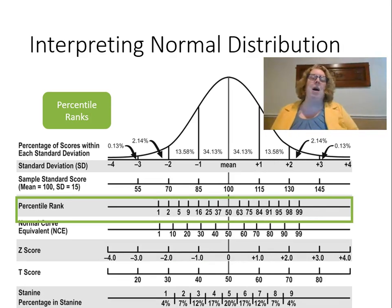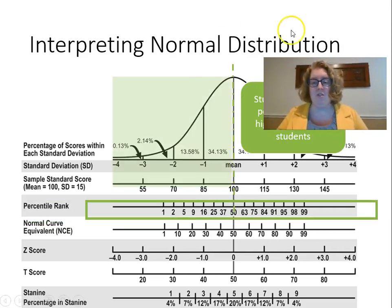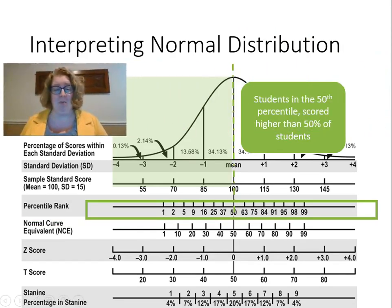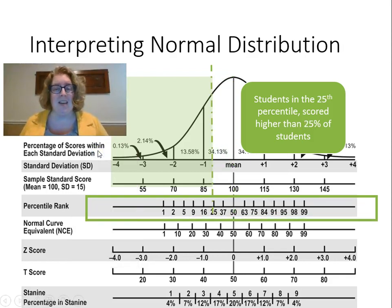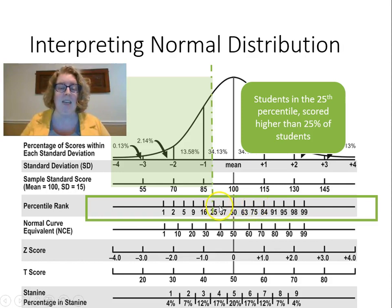Percentile ranks are probably the most reported to parents and the easiest to understand. When a student scores in the 50th percentile, that means they scored higher than 50% of students — completely average. If I'm in the 25th percentile, I scored higher than only 25% of students. That doesn't sound very high, but it's still within one standard deviation of the mean — still within the average range. These percentile ranks get really scrunched up in the middle because most students score within one standard deviation of the mean.